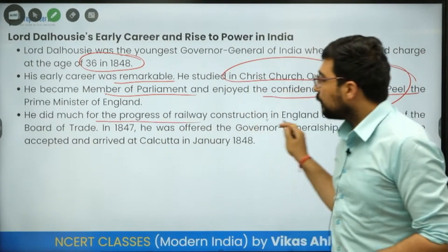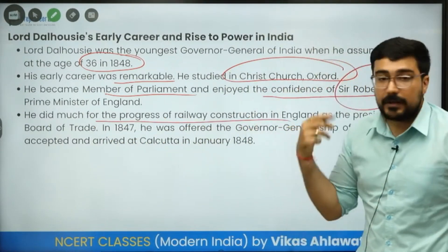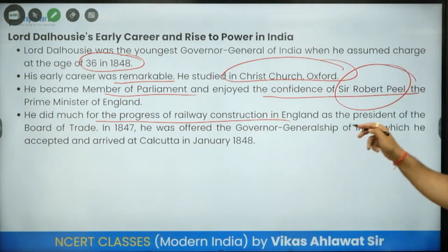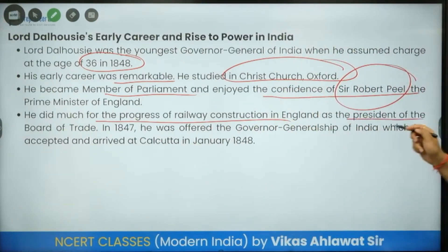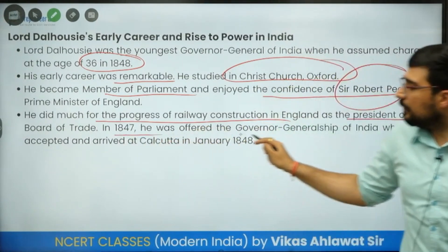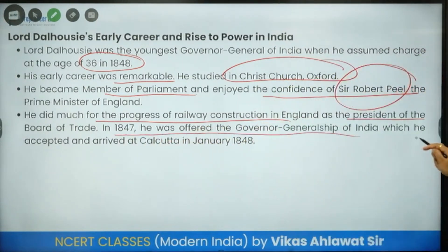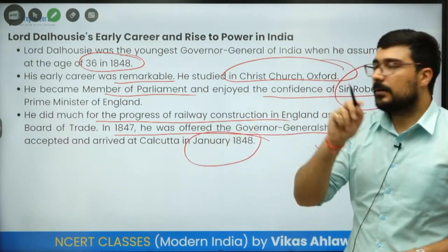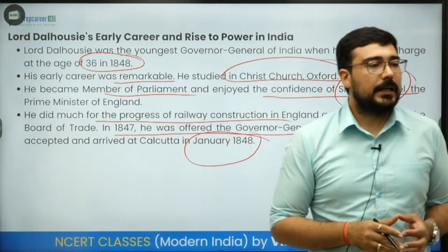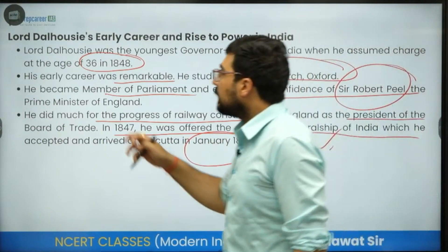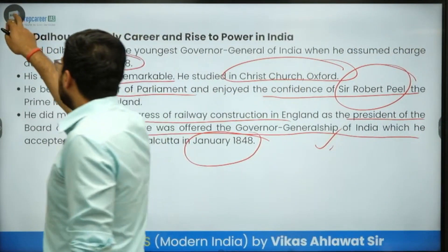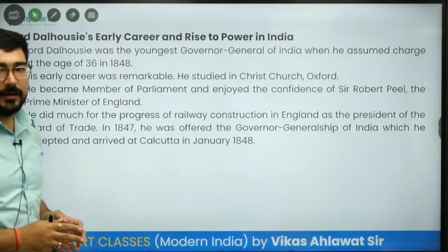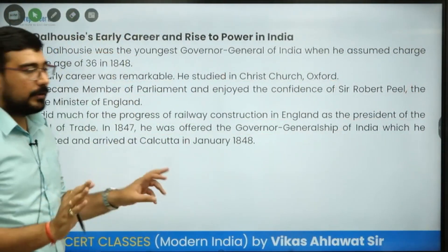He did much for the progress of railway construction in England as President of the Board of Trade. In 1847 he was offered the Governor Generalship, which he accepted, and he came to India in January 1848. He is considered the most prominent imperialist to have ever come to India.